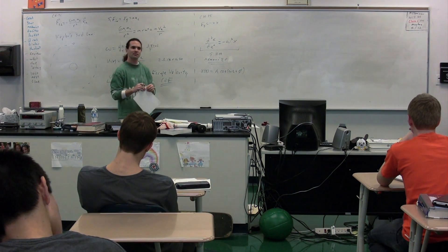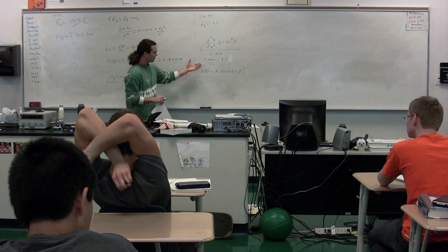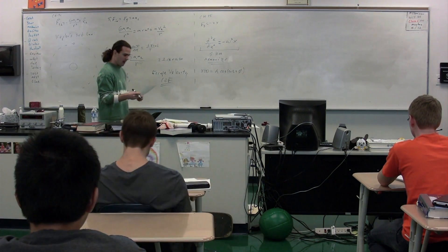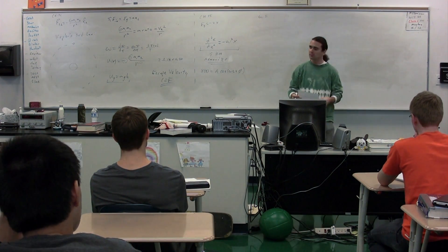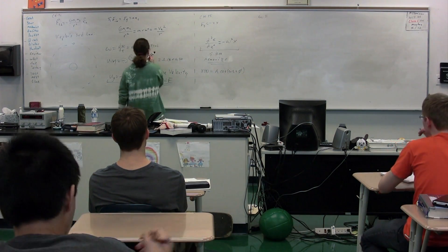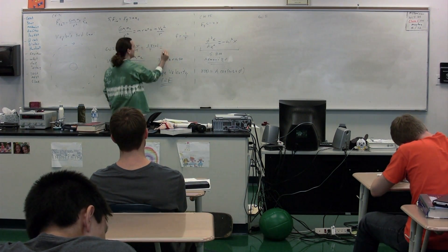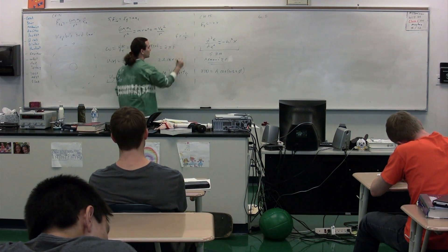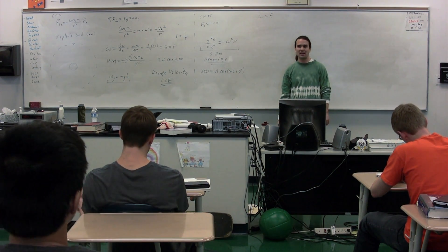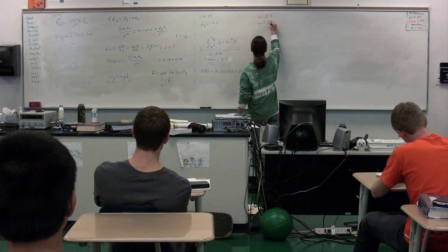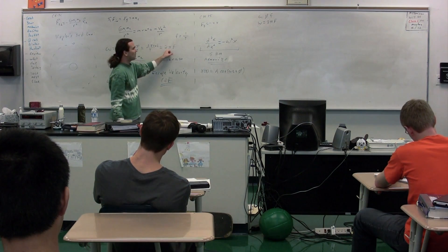How would we figure out the velocity as a function of time if we have the position as a function of time? Take the derivative. The acceleration? The second derivative of position or the derivative of velocity. So clearly if we have any one of those, we can figure out the others. Angular frequency is equal to 2 pi divided by the period. Since frequency equals 1 over the period, angular frequency equals 2 pi times the frequency. So angular frequency and frequency are two different things — they are not the same.